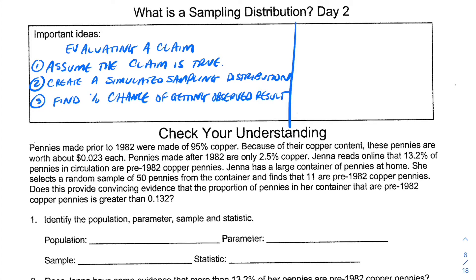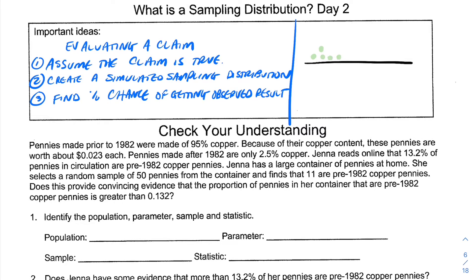It looks something like this. We have a sampling distribution here with a certain number of points on it. This is the simulated sampling distribution. Somewhere along this continuum, we have what is our observed result — so what we got when we actually did the experiment.